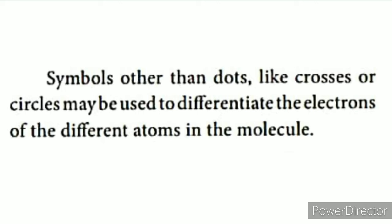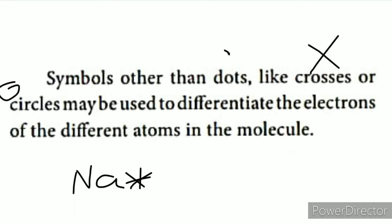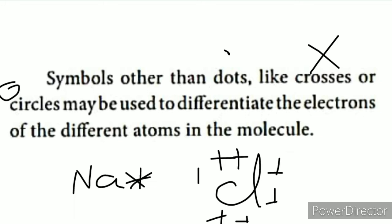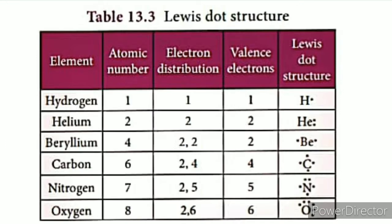Symbols other than dots — like crosses or circles — may be used to differentiate the electrons of different atoms within molecules. For example, sodium has one electron in the last orbit, represented by a cross symbol. Chlorine's electrons are shown with dots. When sodium and chlorine combine, sodium uses the cross symbol and chlorine uses the dot symbol to distinguish their electrons.